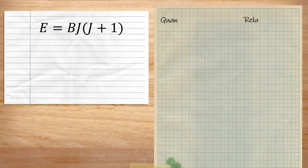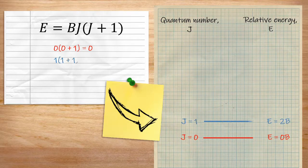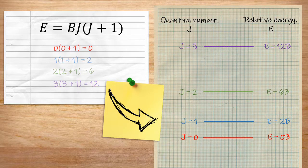If we work out the energy levels of rotations in terms of b, we see a clear structure. Energy levels are further apart as the rotational quantum number j increases.